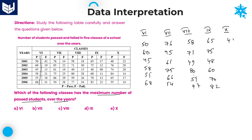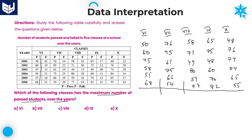Class 10 passed students: 48, 76, 74, 84, 65 and 55. Now guys, it is better to do comparisons instead of calculating each and every value. As we want the maximum number of students passed over the years, compare the two classes.